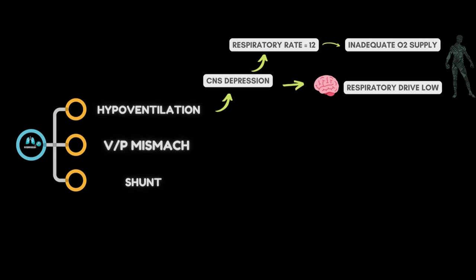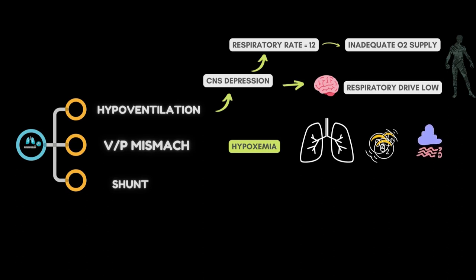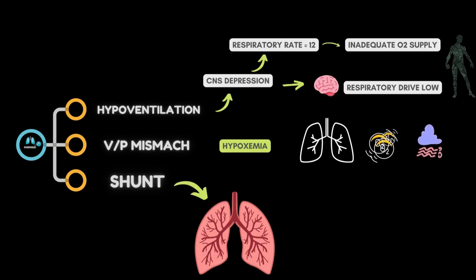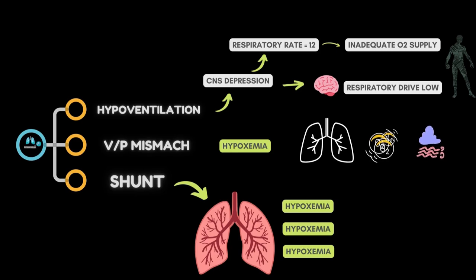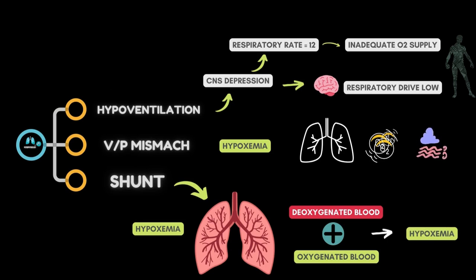The V/Q mismatch is the most common cause of hypoxemia, and hypoxemia is eliminated when 100% oxygen is administered. Ventilation-perfusion mismatch is a condition in which one or more areas of the lung receive oxygen but no blood flow, or they receive blood flow but no oxygen. Last, the shunt — a condition in which despite 100% oxygen inhalation there is prolonged hypoxemia. When a shunt is present, deoxygenated blood (mixed venous blood) traverses the alveoli without being oxygenated, mixing with oxygenated blood that has passed through the ventilated alveoli, resulting in hypoxemia, as seen in pulmonary edema, pneumonia, and atelectasis.